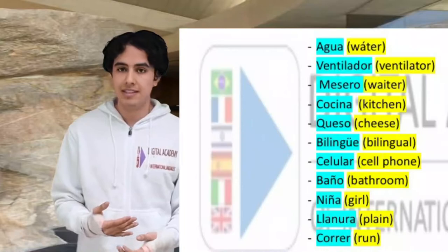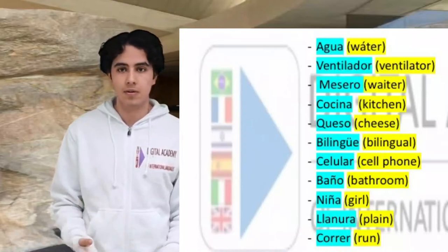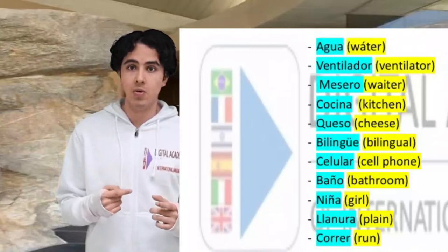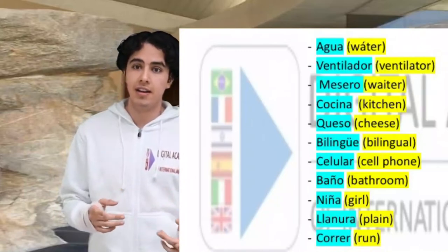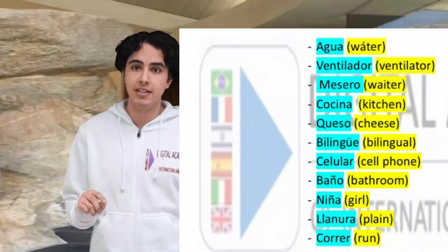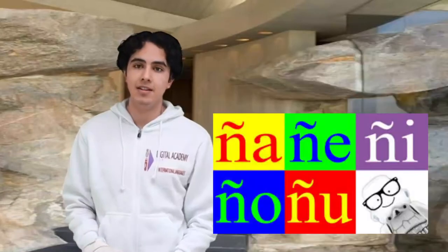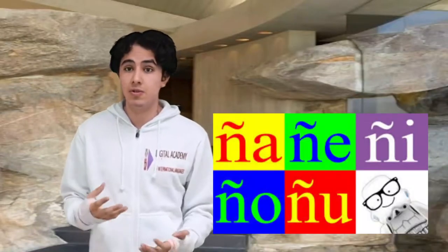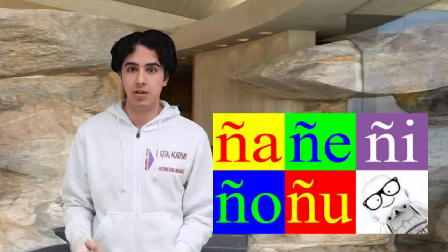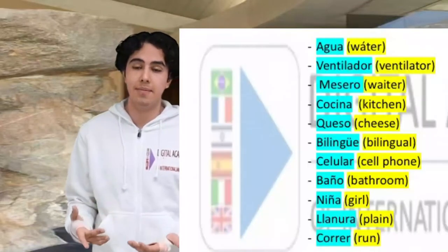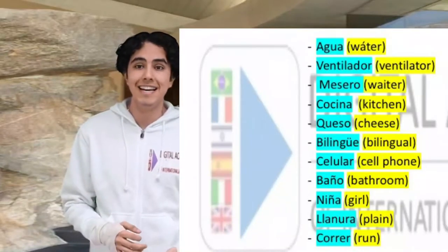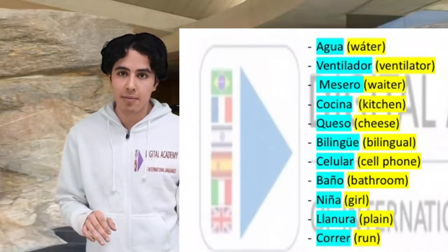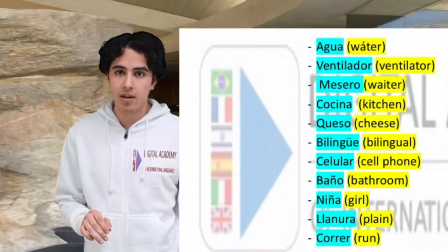Celular — cell phone. Baño — bathroom. In the word baño we see a letter that is not used in English: the letter ñ. It sounds like ña, ñe, ñi, ño, ñu — baño. Another example with ñ is niña, which means girl or a very small girl.